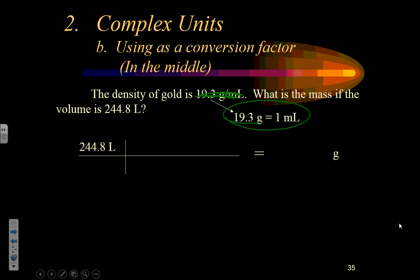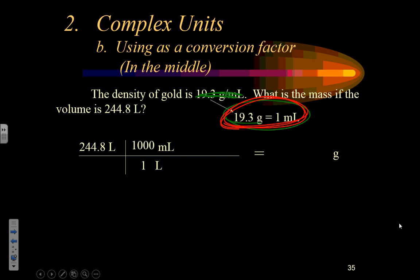I've got liters and I don't want liters, so I need to get to milliliters to use the density conversion factor. I put liters on the bottom to cancel and milliliters on top, with 1,000 milliliters per liter. Now I don't really want milliliters — I want grams. That's what the density conversion factor does: for every 19.3 grams, there's one milliliter of gold. This converts from a volume unit to a mass unit. Mathematically: 244.8 times 1,000 times 19.3 gives my answer.